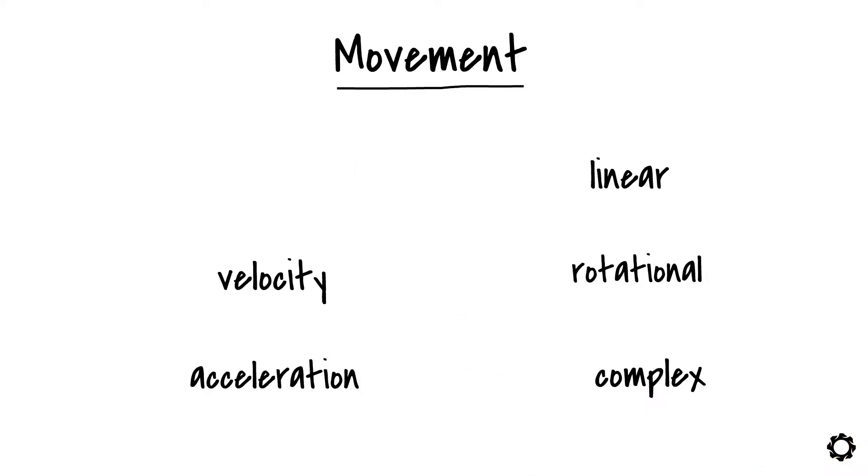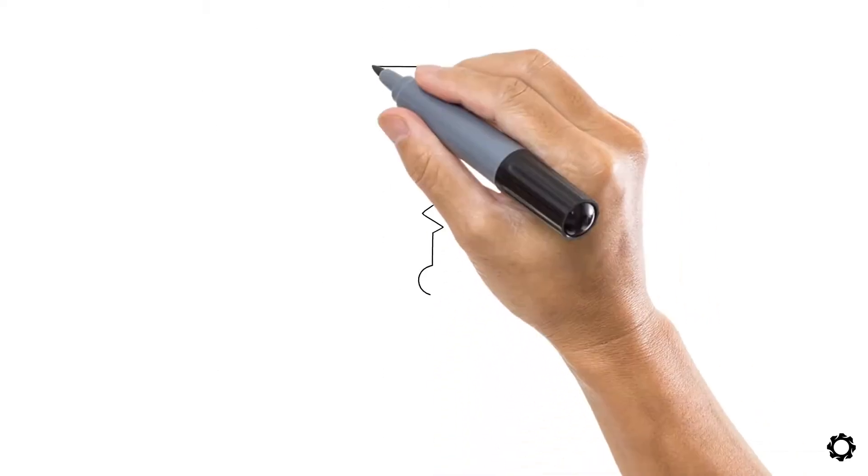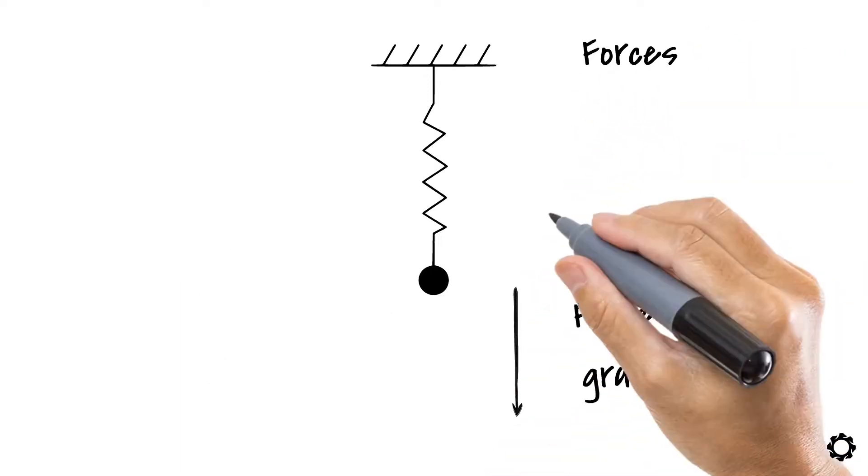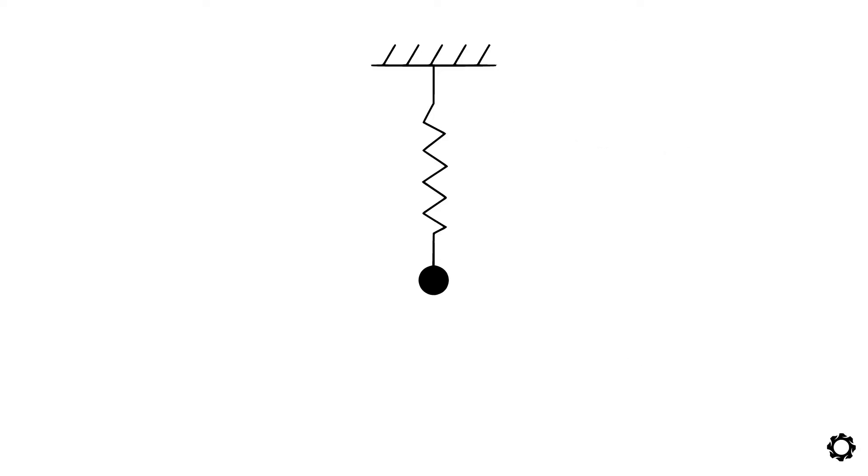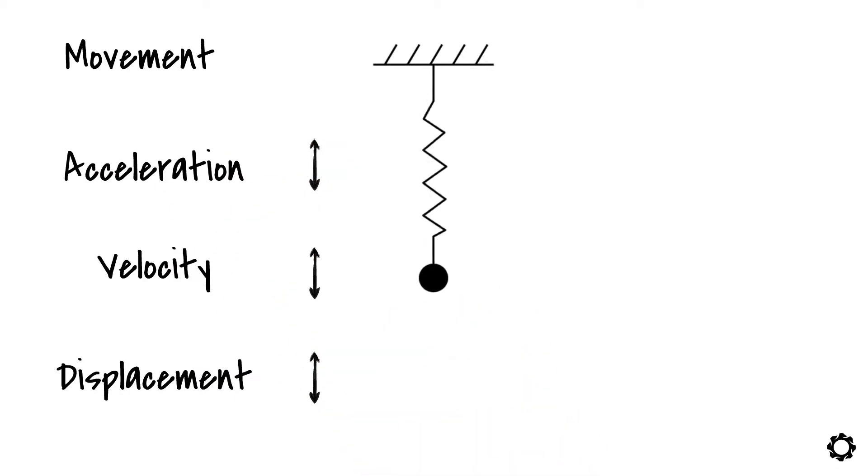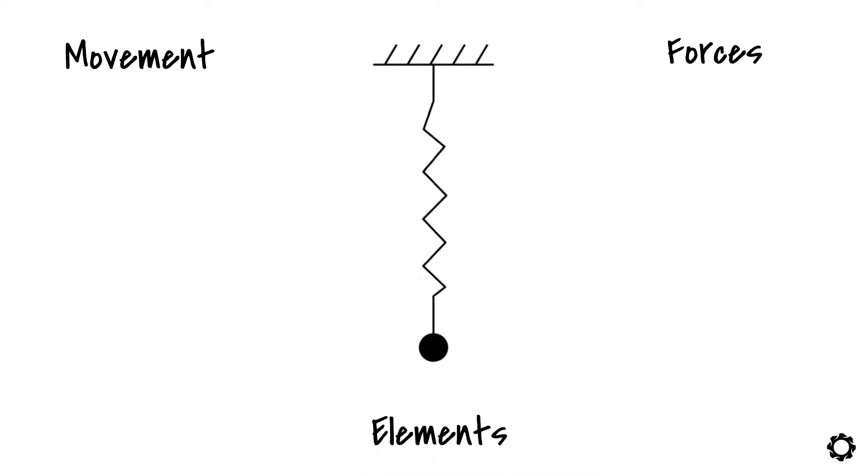Let's test our definition of a mechanical system using one of the most well-known and studied mechanical systems, the spring mass system. Now we see that we have elements, the mass and the spring. We have forces, gravity and the one exerted by the spring. And if we pull the mass a little bit downwards, then a movement appears as linear displacement, velocity and acceleration of the mass. All of this combined in our simple concept of a mechanical system defines the totality of the spring mass mechanism.